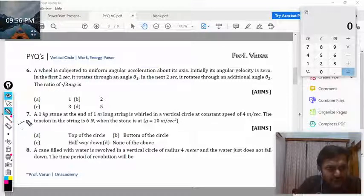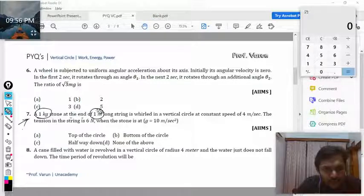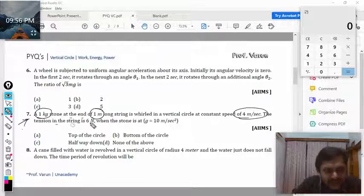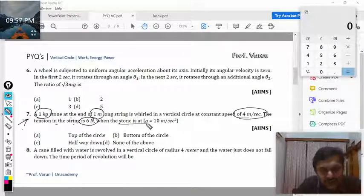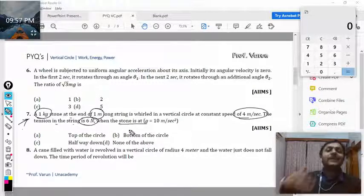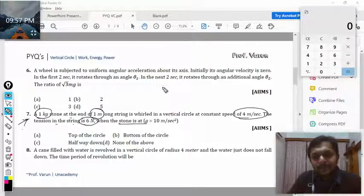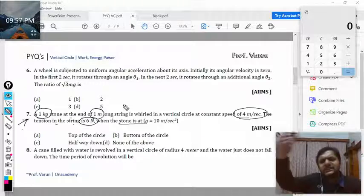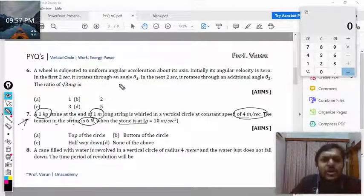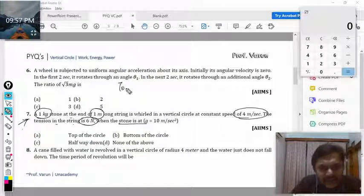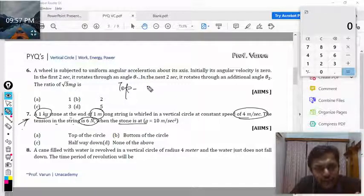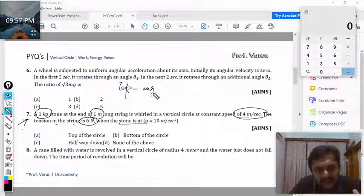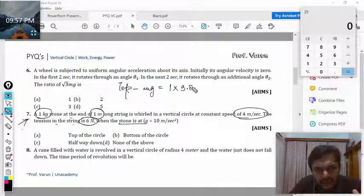A one kg stone at the end of a one meter long string is whirled in a vertical circle at constant speed. The tension in the string is 6 newtons when the stone is at what position? We will see whether at the top or bottom or any other position. Let us have the special case of top. For top, the weight mg will be 1 into 9.8.